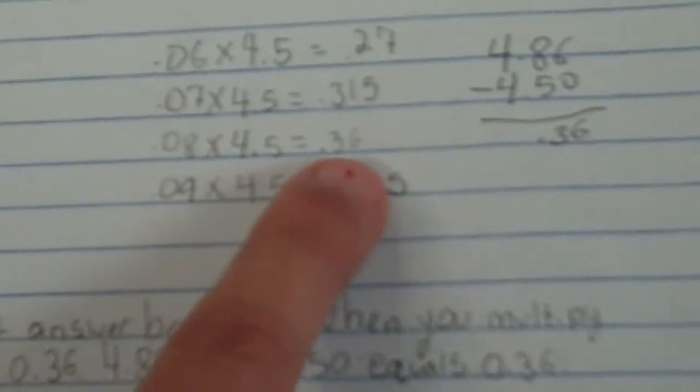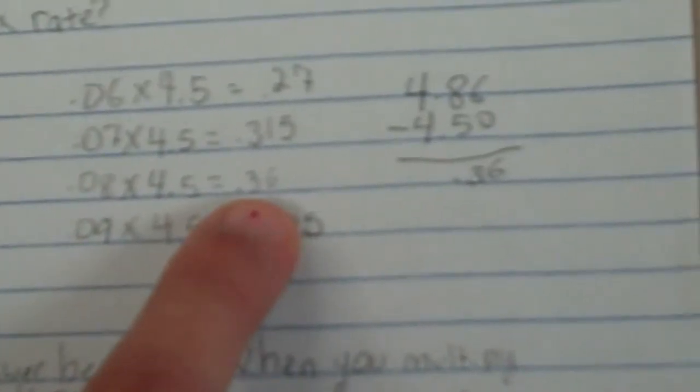But then when I times it by 0.08, I got 0.36, which is 36 cents.